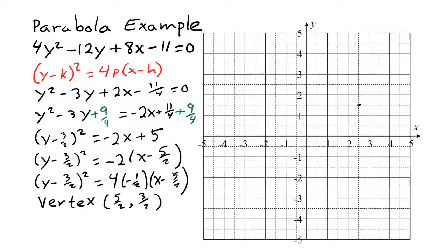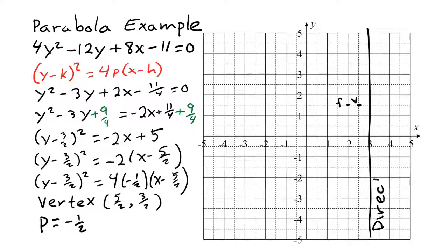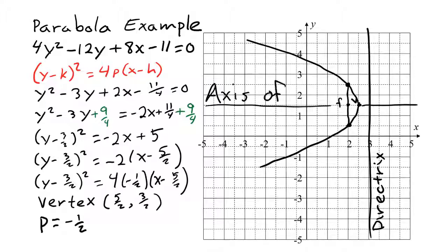We plot the vertex. Because the square is on the y, the parabola opens to the side; because p is negative, the focus is on the left side of the vertex — one half space to the left. The directrix is one half space to the right of the vertex, making the focus and directrix one space apart. We go one space up and down from the focus to find the ends of the latus rectum, sketch the parabola, and add the axis of symmetry through the focus and vertex, perpendicular to the directrix.